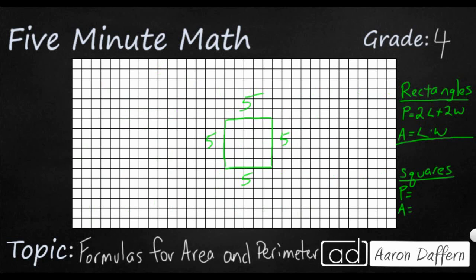So the area and perimeter equations that we just learned for rectangles, they'll work for squares, because squares are special types of rectangles. So if I wanted to use this perimeter, I would say 2 times 5 plus 2 times 5. So that's going to be 10 and 10. That's going to be 20.